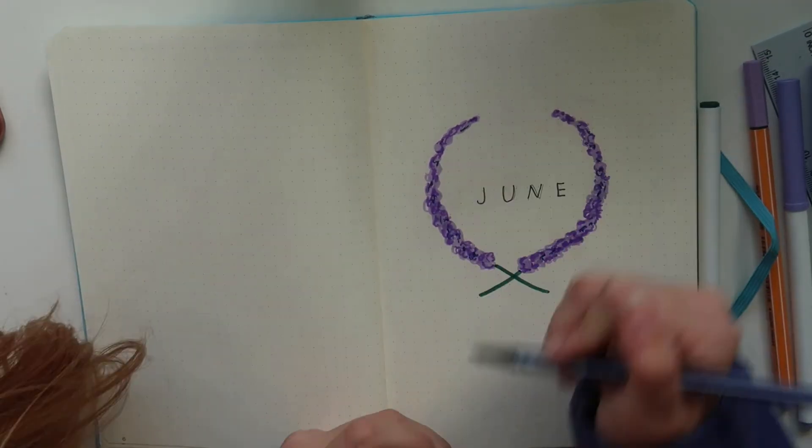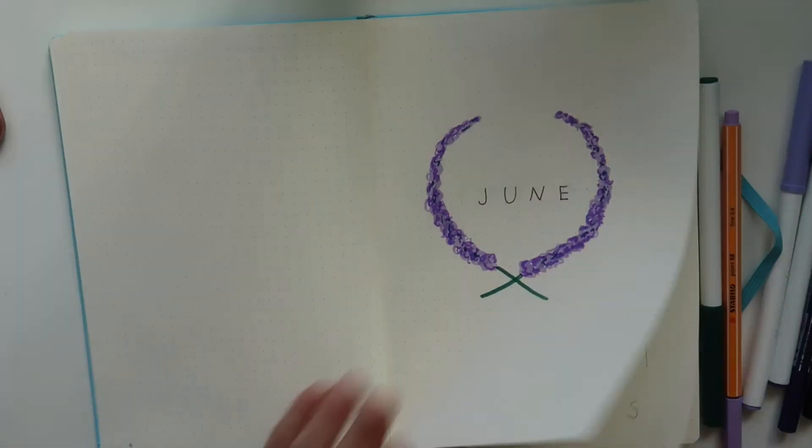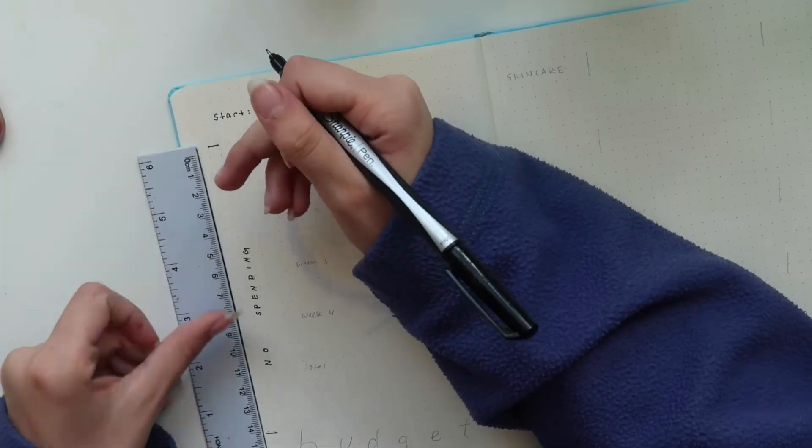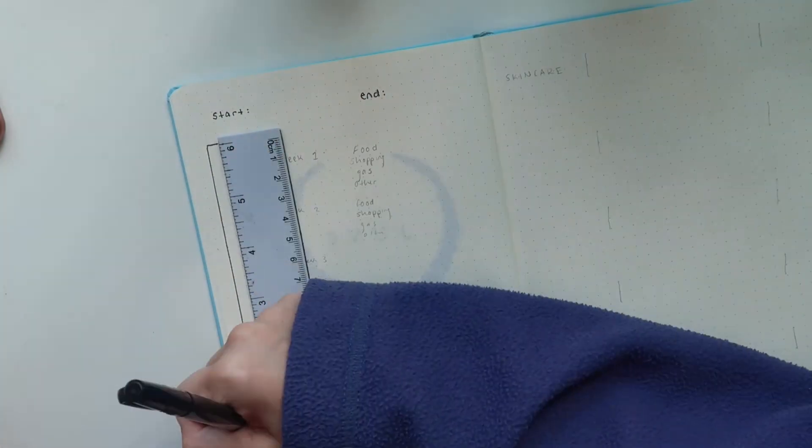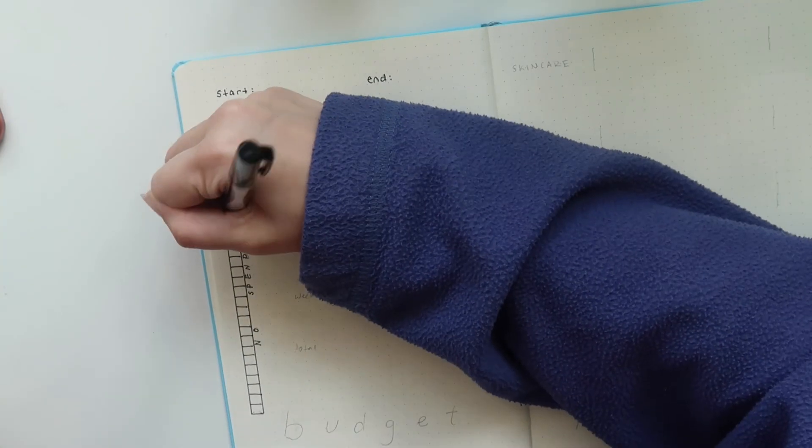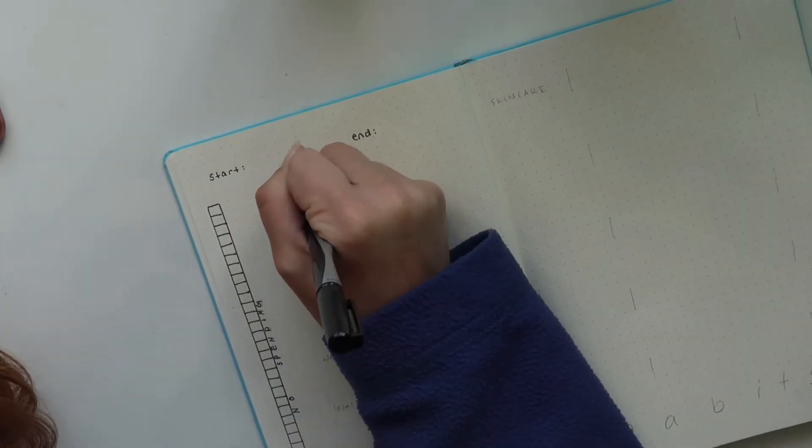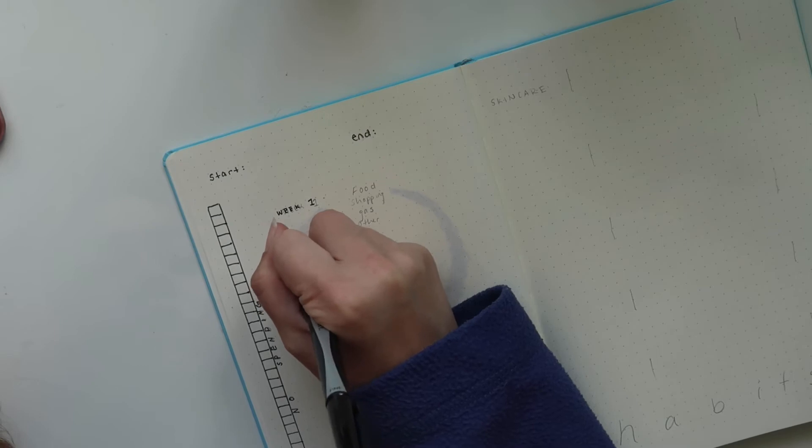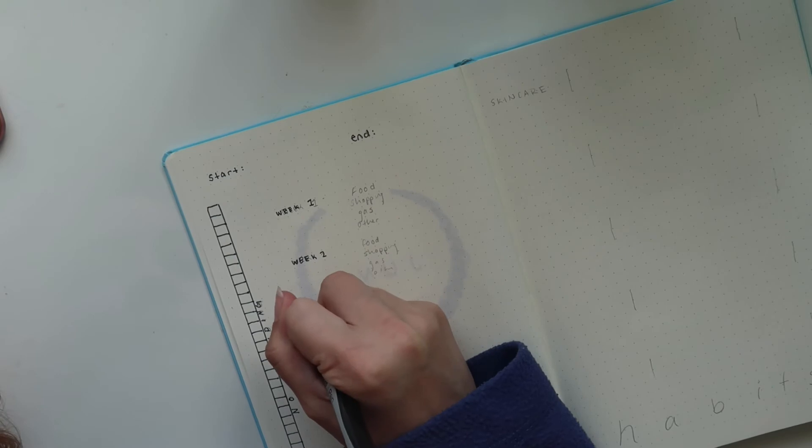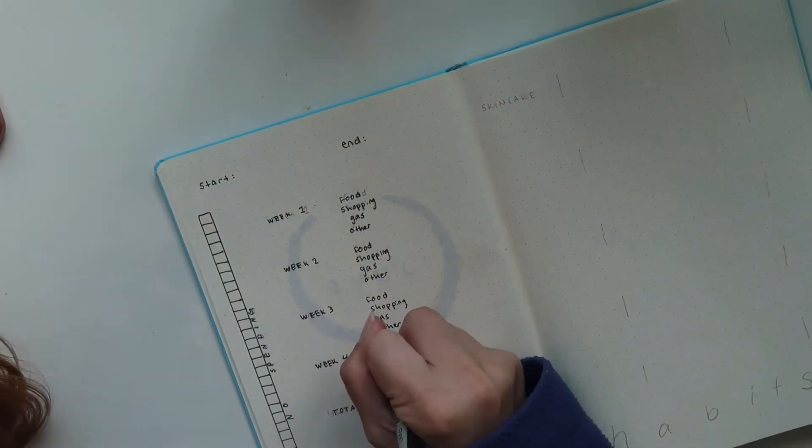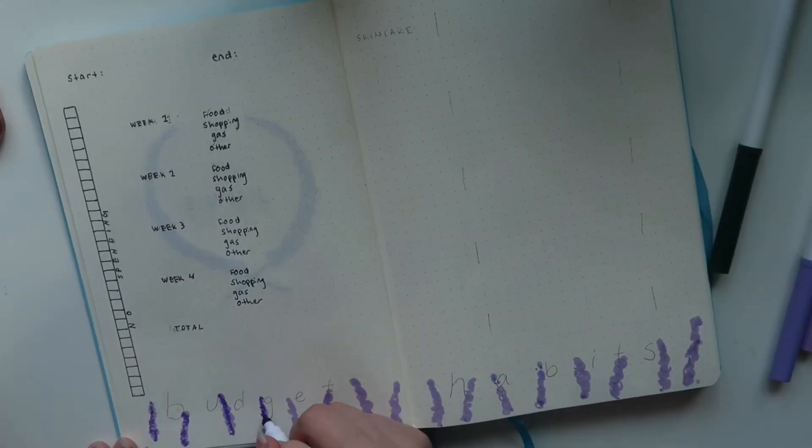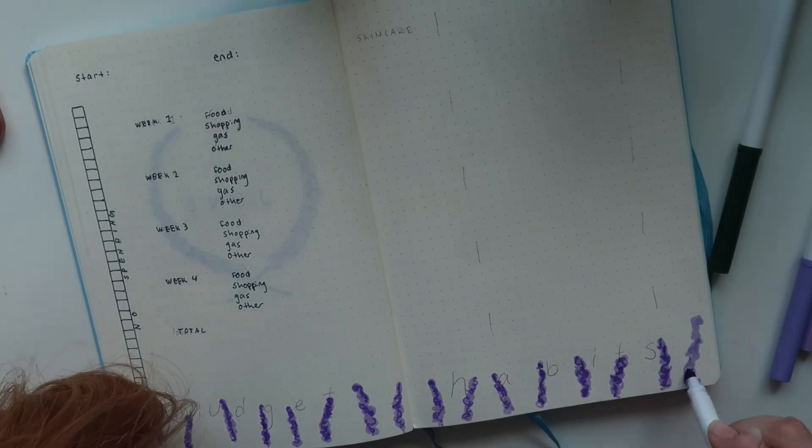My next page in my bullet journal is my budget tracker. This page I really suck at keeping up with, but I think it's really important to use. Unfortunately, I just never... I try to make it so it's a better setup so that I'm more motivated to keep up with it and I use it more. That's just been really hard for me for whatever reason. I'm gonna give this a shot. I'm gonna do like a start and end at the very top, and then I have my no spending along the side there, and then over here I have like each of the different weeks. I'm hoping to kind of dissect my spending a little bit more and see where most of my money is going.